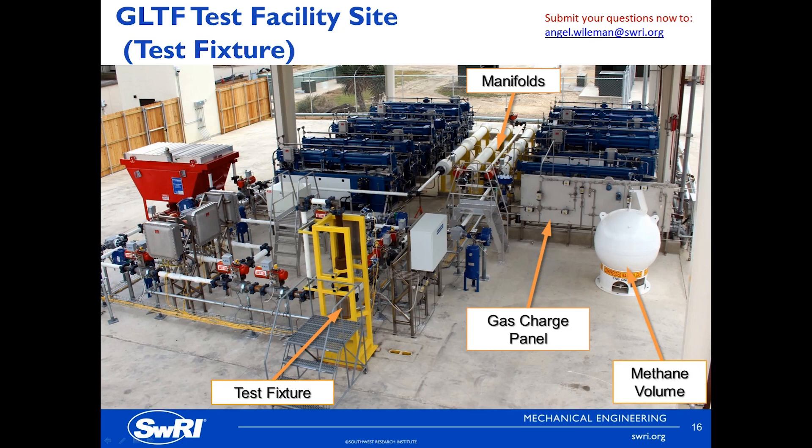Here's a zoomed-in photograph of the GLTF. In the background, the bank of high pressure gas compressors can be seen — those are the ones in blue in the background. The gas lift test fixture can also be seen in the foreground mounted to the yellow structure. We also have some other components there: some chillers, a methane volume, and a gas distribution panel, which are all integral to the test.